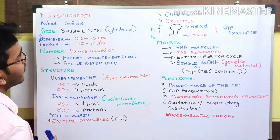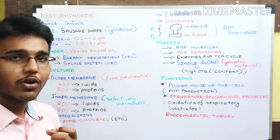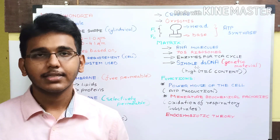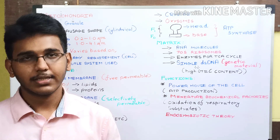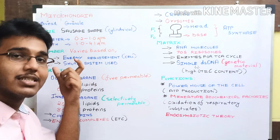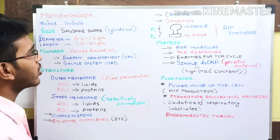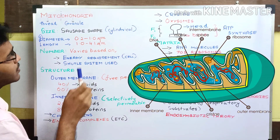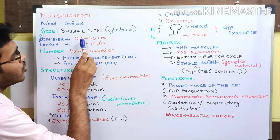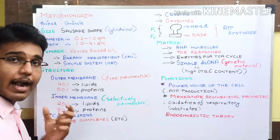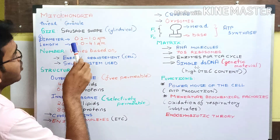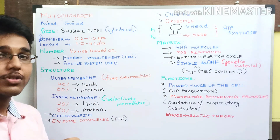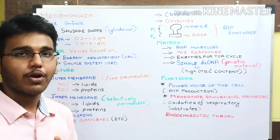Next, the size of mitochondria varies according to the work done by the cell in which the mitochondria is present. Mostly the shape of mitochondria is sausage-shaped or cylindrical. The diameter varies from 0.2 to 1 micrometer and the length varies from 1 to 4.1 micrometers.